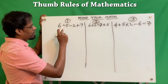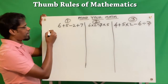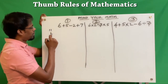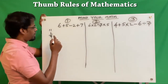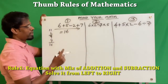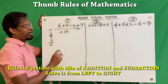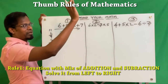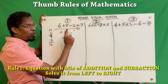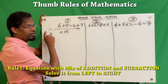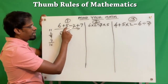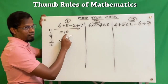So let's do this one. 6 plus 5 is 11. Then minus 2, so 11 minus 2 is 9. Then 9 plus 7 is 16. So the answer is 16. Rule 1: when you have only addition and subtraction in the entire equation, you just go from left to right.